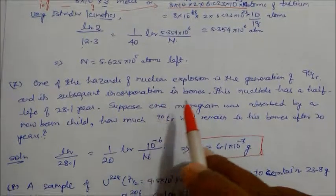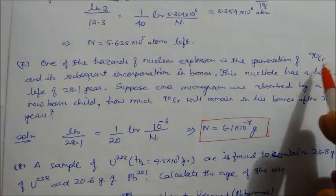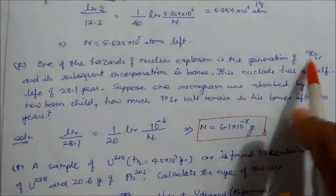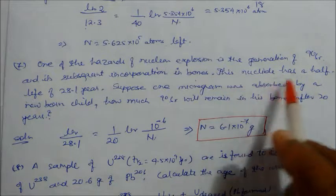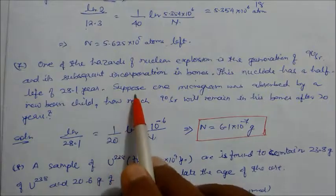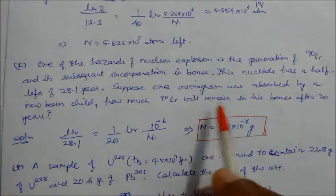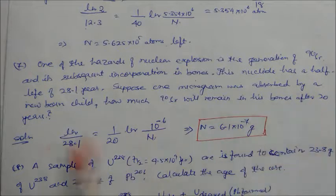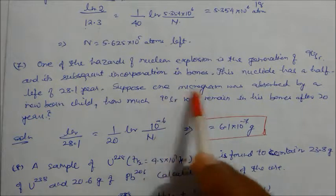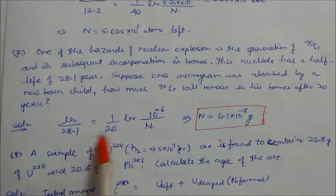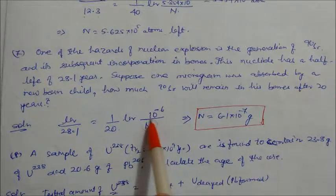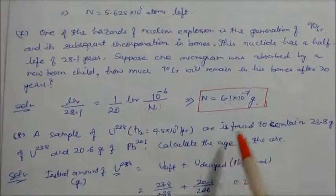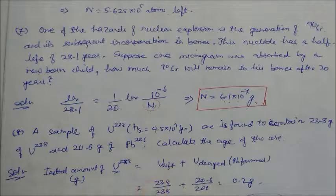Problem 7: One of the hazards of nuclear explosion is the generation of strontium-90 and its incorporation in bones. Strontium-90 has a half-life of 28.1 years. Suppose 1 microgram is absorbed by a newborn child — how much strontium-90 will remain in his bones after 20 years? Using first order kinetics, N = 6.1×10⁻⁷ grams will remain after 20 years.